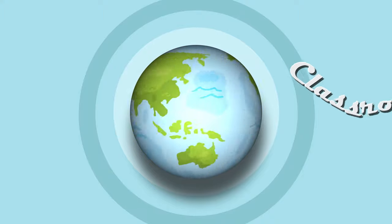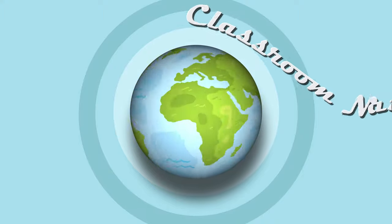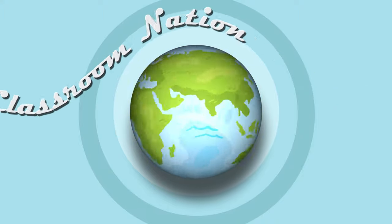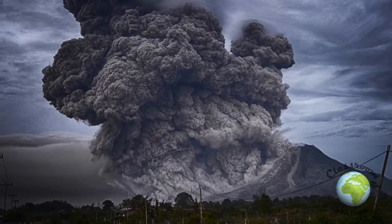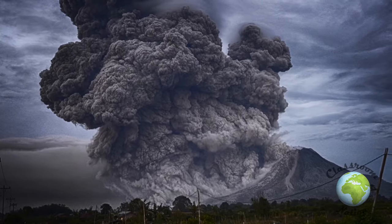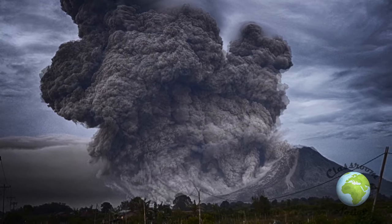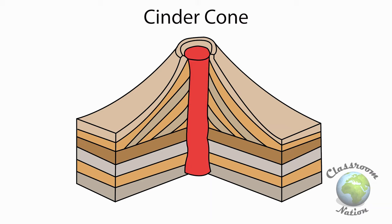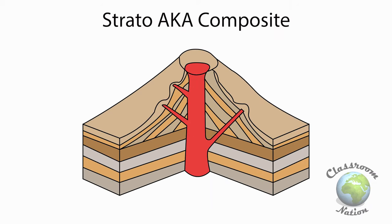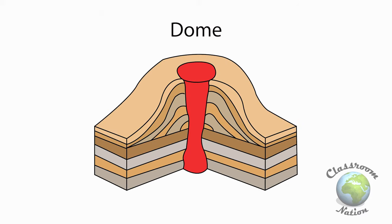Hello and welcome to Classroom Nation. I'm Andy and today we will be looking at volcanoes, and in particular the different types of volcanoes that there are. There are four main types of volcanoes: the first is cinder cone, the second shield, third composite (also known as strato), and fourth lava dome.